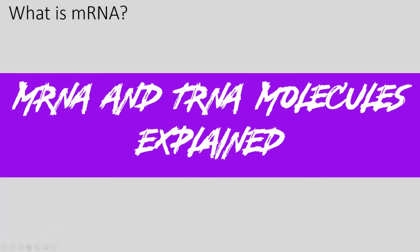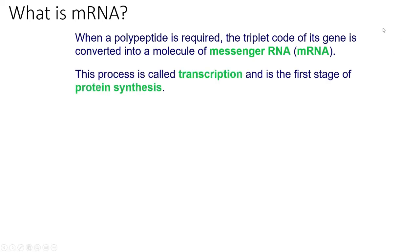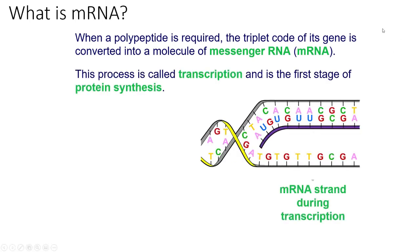We've had a look at the base of the genetic code and before we look at transcription and translation we need to make sure we know two important molecules that are involved in that process. First of all we've got mRNA. mRNA stands for messenger RNA and that's exactly what it is — it's a messenger. It's going to take the information from the DNA out of the nucleus and send it to the ribosome where it can be translated into a protein.